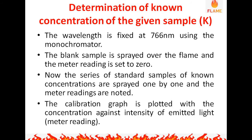Flame photometry is also used for the analysis of soft drinks, fruit juices, and alcoholic beverages. For determination of unknown concentration, if the given sample is potassium, the wavelength is fixed at 766 nm using a monochromator. For sodium, the wavelength is fixed at 589 nm, and for lithium, at 670 nm. Then the blank sample is sprayed over the flame.